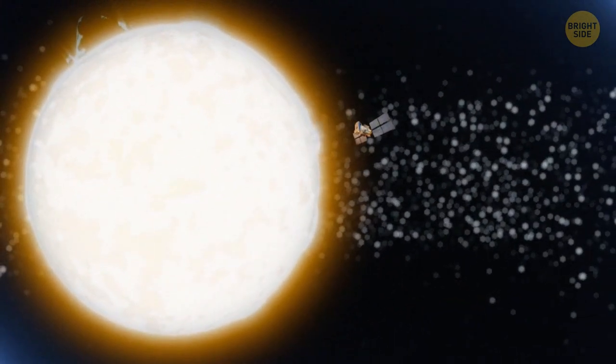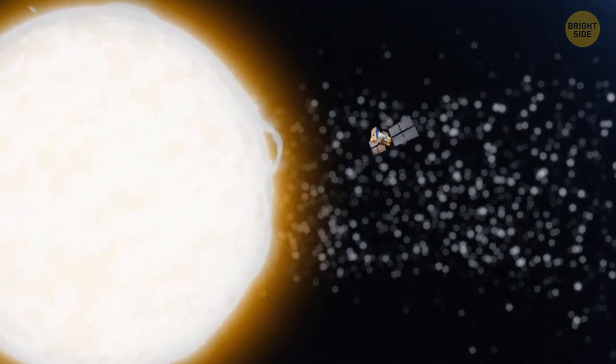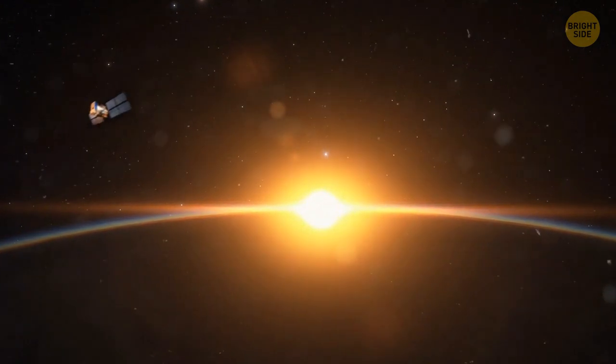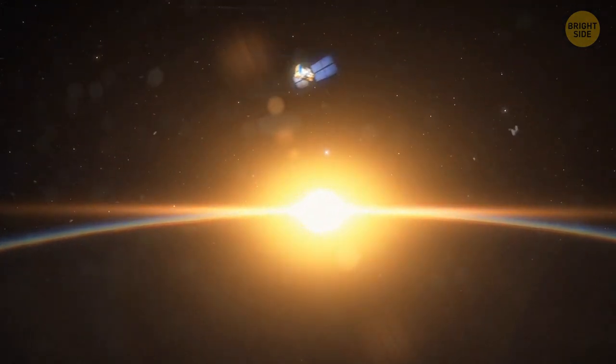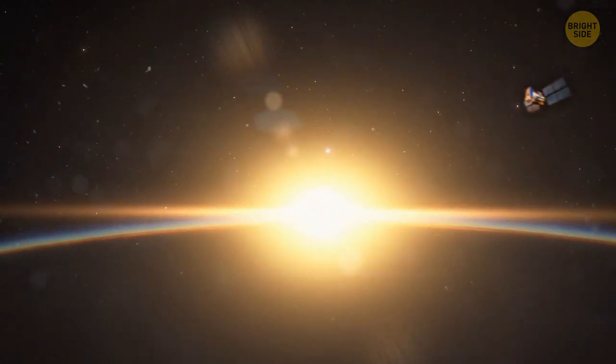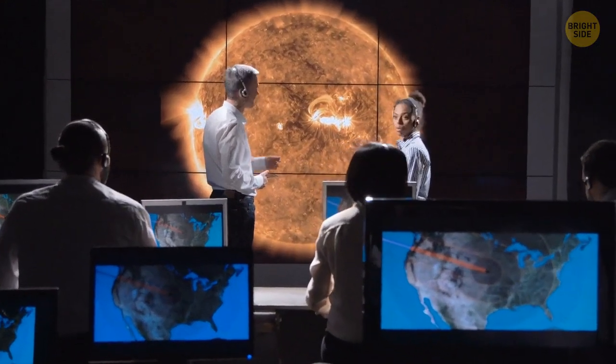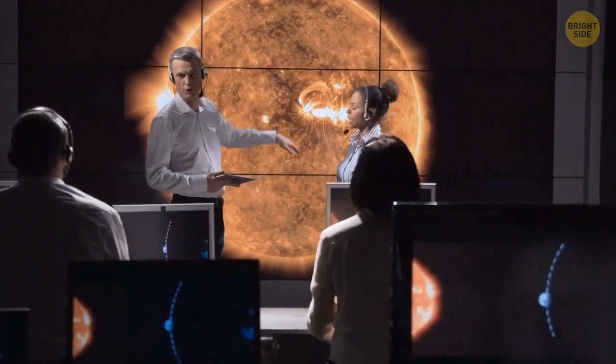It still had a lot of speed and energy, but it was struggling against the gravitational force of the star. So, it gradually slowed down. The point where the probe lost all its acceleration is called aphelion. The star's gravitational force won, and the probe began to move back toward the sun, picking up speed again.